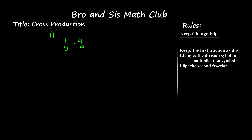Now let's look at this simple rule. This is a method called Keep Change Flip, or KCF. The first step is to keep the first fraction as it is, so it's going to stay as one over five. The second step is to change the division symbol into a multiplication symbol.